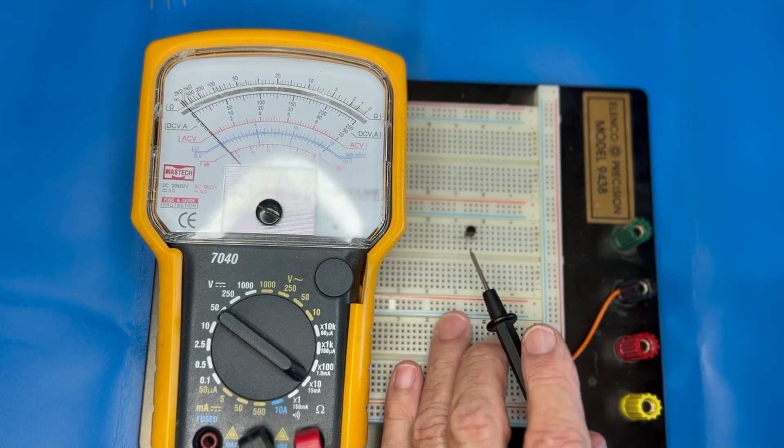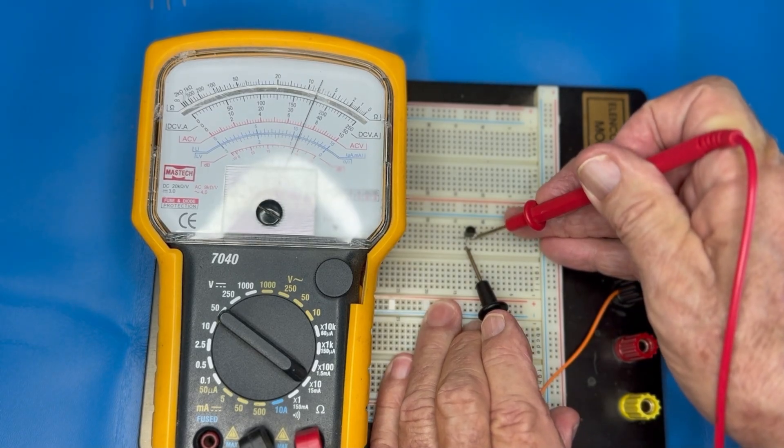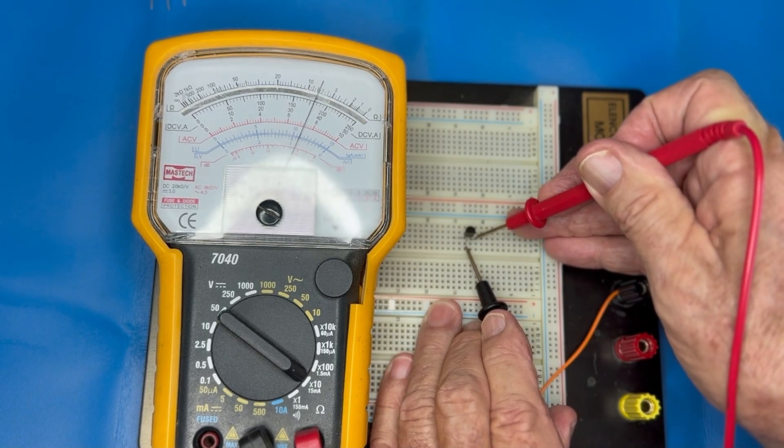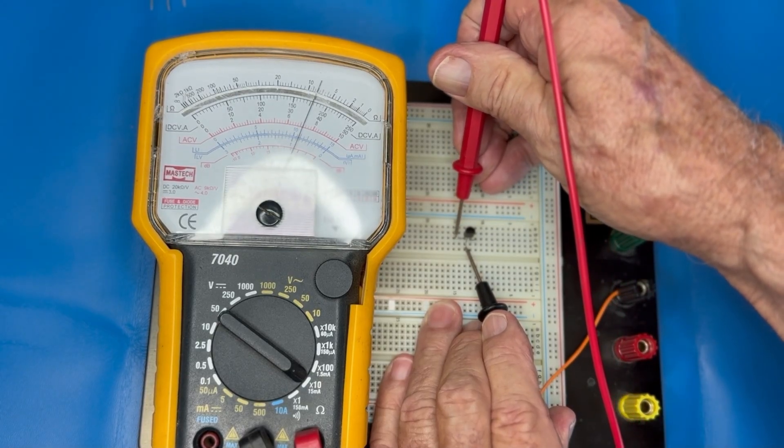So I have a positive lead here, positive voltage. To the collector, we have conduction, as you can see by the meter. I do that to the emitter, I have conduction.